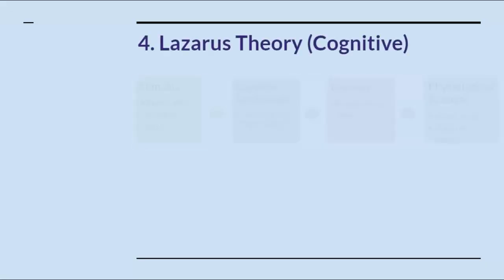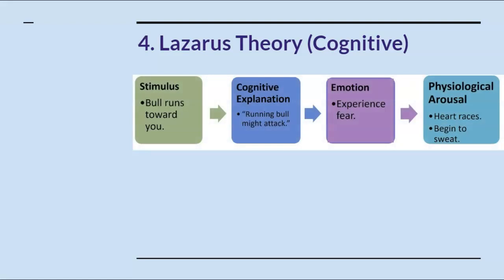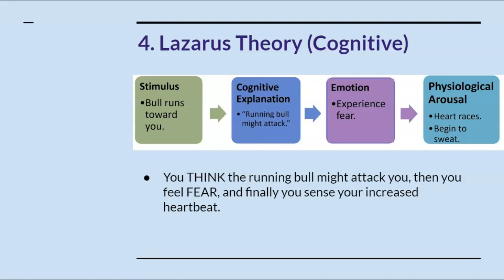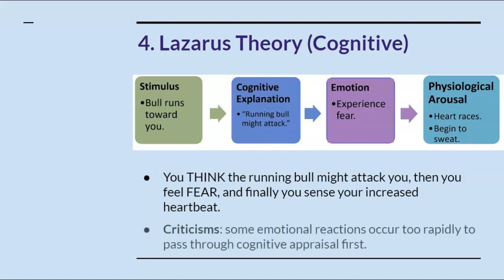The fourth theory is the Lazarus theory. Lazarus hypothesized that thoughts are extremely powerful and happen before anything else. Thinking happens first, then you experience the emotion of fear, and then the body catches up by physically reacting with heart racing and sweating. This theory may explain any students who had different pre- and post-happiness scores in the guided visualization exercise. Thinking about the happiest moment in your life triggered the emotion of happiness or perhaps sadness, and then your body reacted with a smile or teary eyes. Some emotional reactions, like swerving to miss a car accident, occur too rapidly to pass through cognitive appraisal first — and that's why there are four theories to explain our emotions.